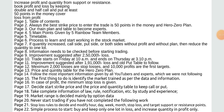Increase profit and quantity from support and resistance. Book profit and loss by keeping double and half call and put — at least 50 points in the money. Cover loss from profit. Table of contents: 1. Table of contents. 2. Always the best strike price to enter the trade is 50 points in the money and hero zero plan. 3. Our main plan and table to become experts.